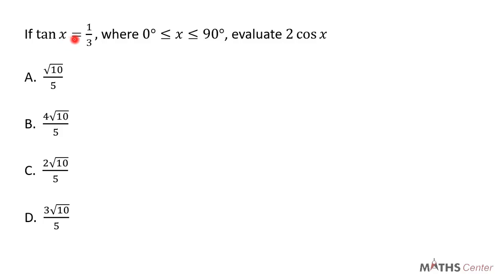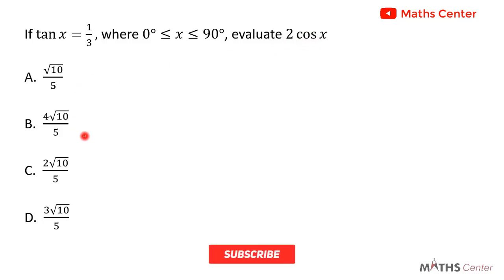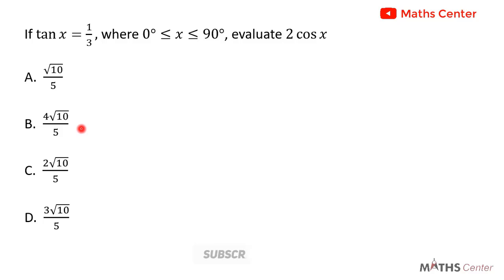If tan x is equal to 1 divided by 3, where x is between 0 degrees and 90 degrees, calculate 2 cos x. This is a multiple choice question, so we will solve the question and after that we will pick the correct option. The question tells us that tan x is equal to 1 divided by 3.